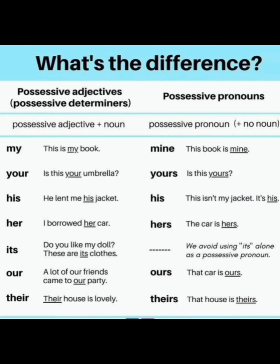Do you like my doll? These are its clothes. 'Its' is used as an adjective and we avoid using 'its' alone as a possessive pronoun because after 'its' we always use a noun. 'A lot of our friends came to our party' — 'our' is used as possessive adjective in both cases. 'That car is ours' — here it is a pronoun. 'Their house is lovely' — adjective. 'That house is theirs' — pronoun.